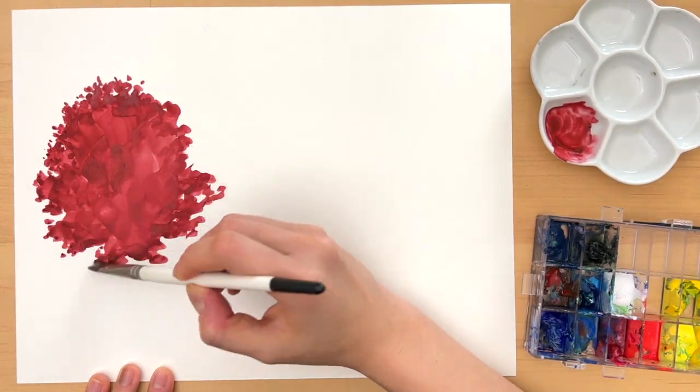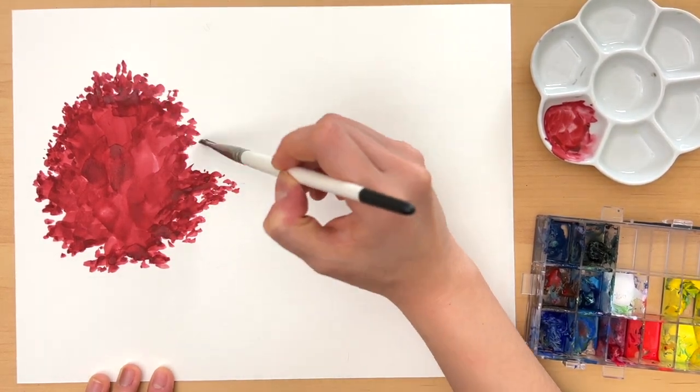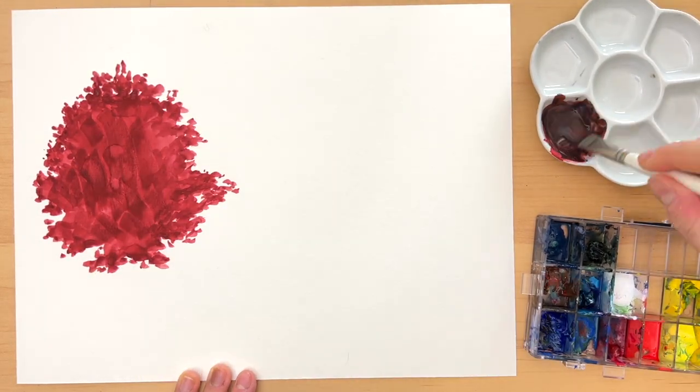Not only do you want your silhouette to read as a tree, you also want your audience to be able to tell in general what type of tree that is.